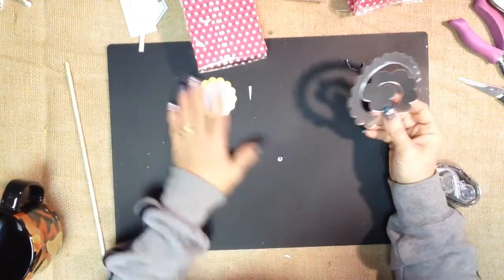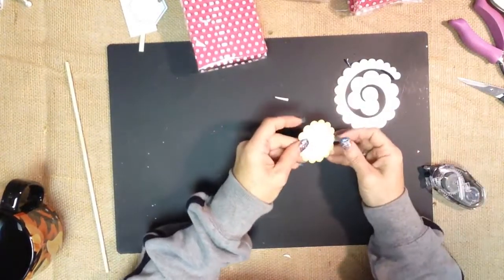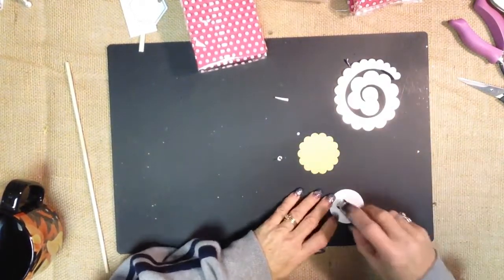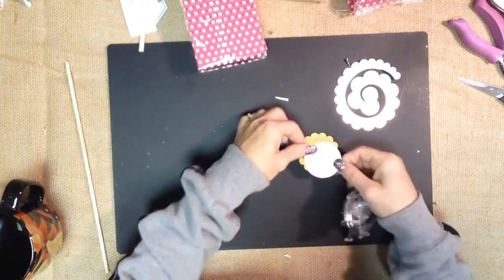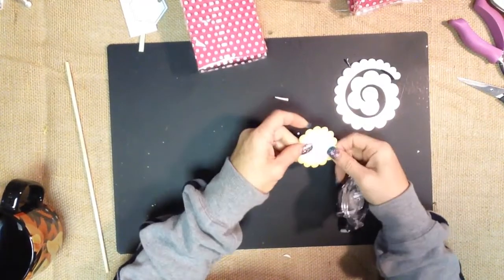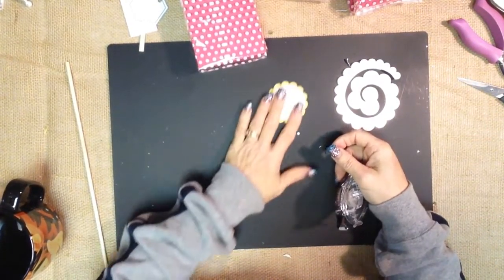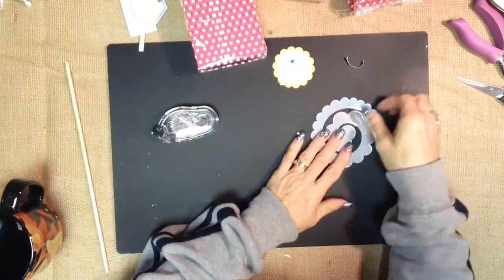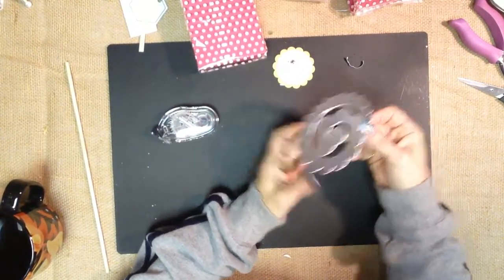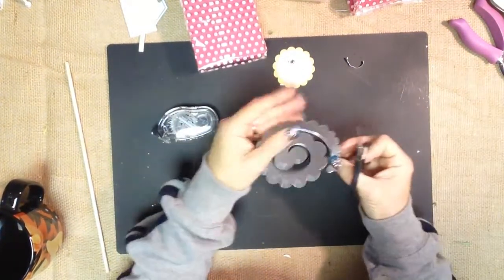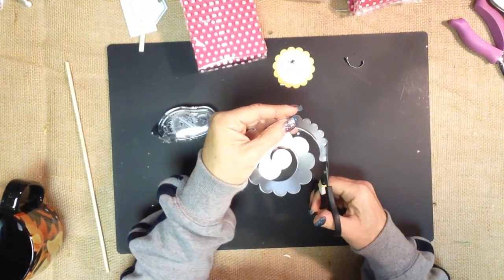So let's set that aside. We want to add some embellishments to it. First we have Celebrate Baby stamped in Melon Mambo. We'll put a little adhesive on that, a daffodil scallop circle. And now we can set those aside. We have our spiral die cut from Silver Foil. And what we're going to do is starting on the outer edge, we're actually going to cut...